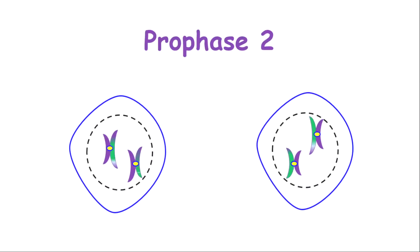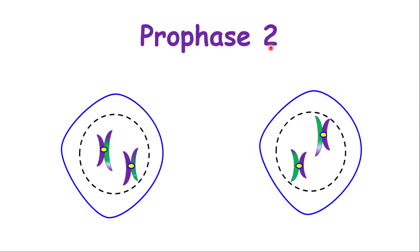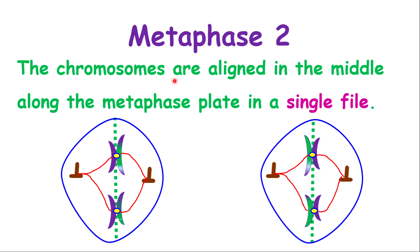After cytokinesis is finished, we go into the second set of divisions — PMAT 2. This second phase of meiosis is similar to regular mitosis: in prophase 2 the chromosomes condense and the nuclear membranes start to disappear, just the same. In metaphase 2, the chromosomes align on the metaphase plate, but this time they are in single file — unlike metaphase 1 where they were parallel side by side.